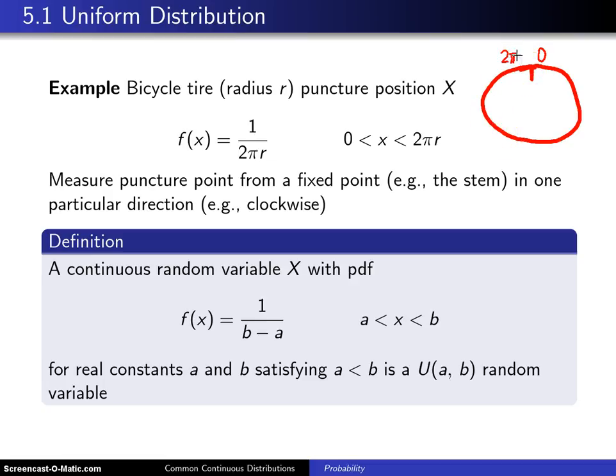So if there is a puncture on this tire, you know it happens somewhere between 0 and 2πR. I guess if we were being careful, it could happen right at the stem. So one could possibly throw in a less than or equal to there.